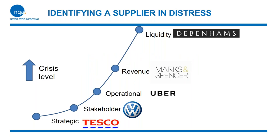Thanks Tim. Before we get into the functions of supply and supplier risk management, I wanted to spend a few minutes looking at the types of distress signals that can eventually lead to a company's liquidity failure. I think there are five stages of crisis. The strategic crisis includes things like a change in ownership, conflict in a group of companies, high turnover of staff, loss of key people, and outliers in company strategy that could indicate risk tolerance is out of step with the company's financial position.